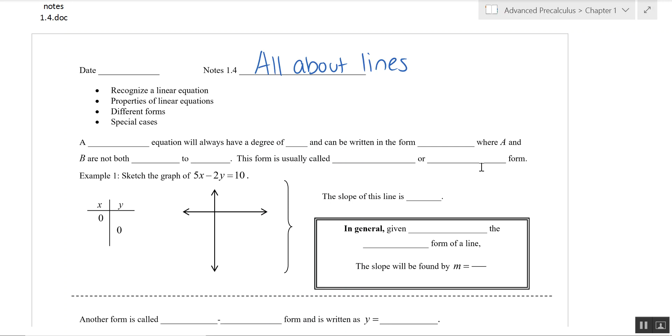All right, this lesson is all about lines. We're talking about a linear equation today. Linear equations always have the degree of 1, meaning it's x to the first. So x to the first is always linear, x squared is quadratic, x cubed would be cubic.